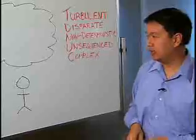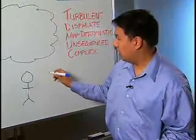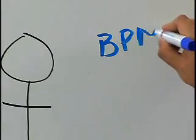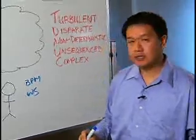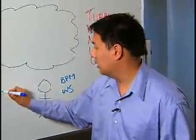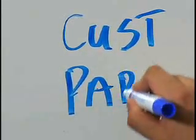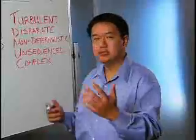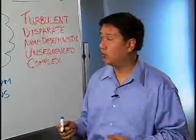Imagine this is you and your company, and surrounding you is a sea of events. Some of these events are emitted from inside your company — things like your business processes and web services. Outside your company, your customers, partners, and competitors are also triggering events to happen. How do you make sense of it all? How do you know what's going on, what's important to pay attention to, and what's not?